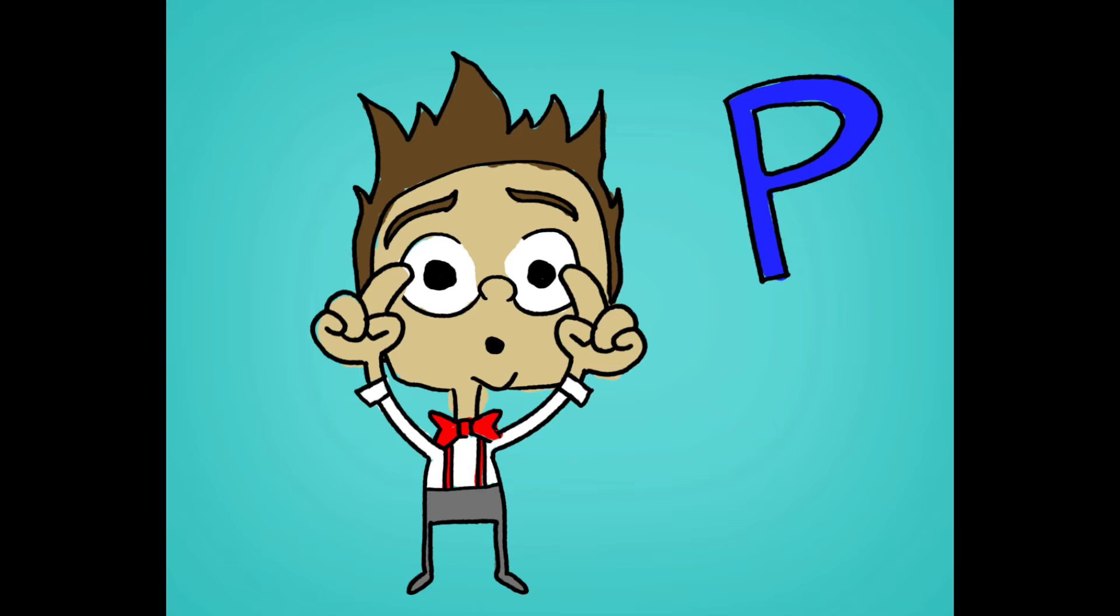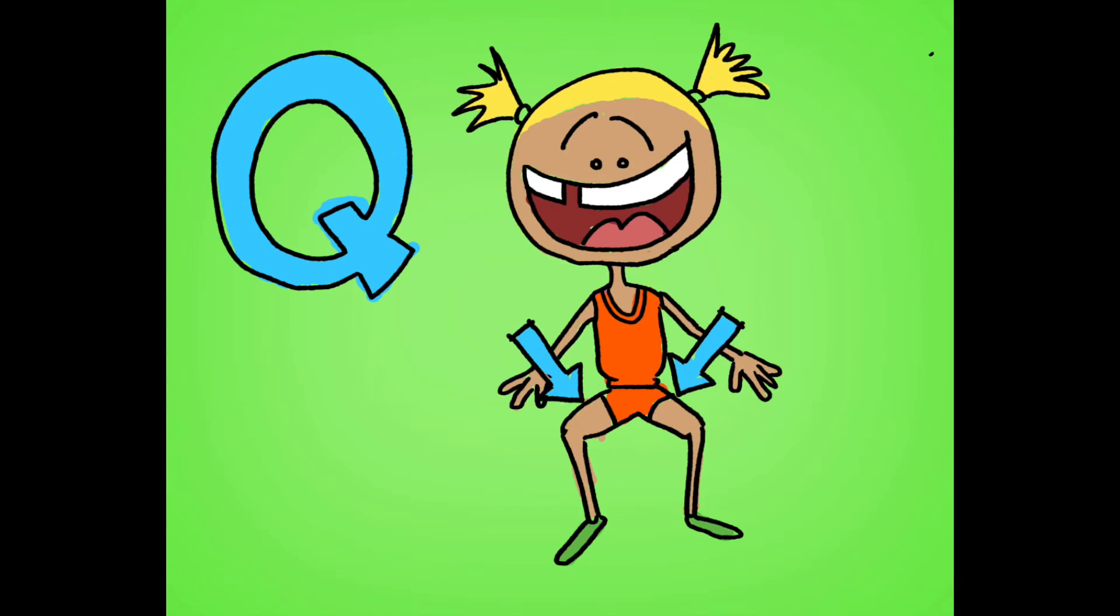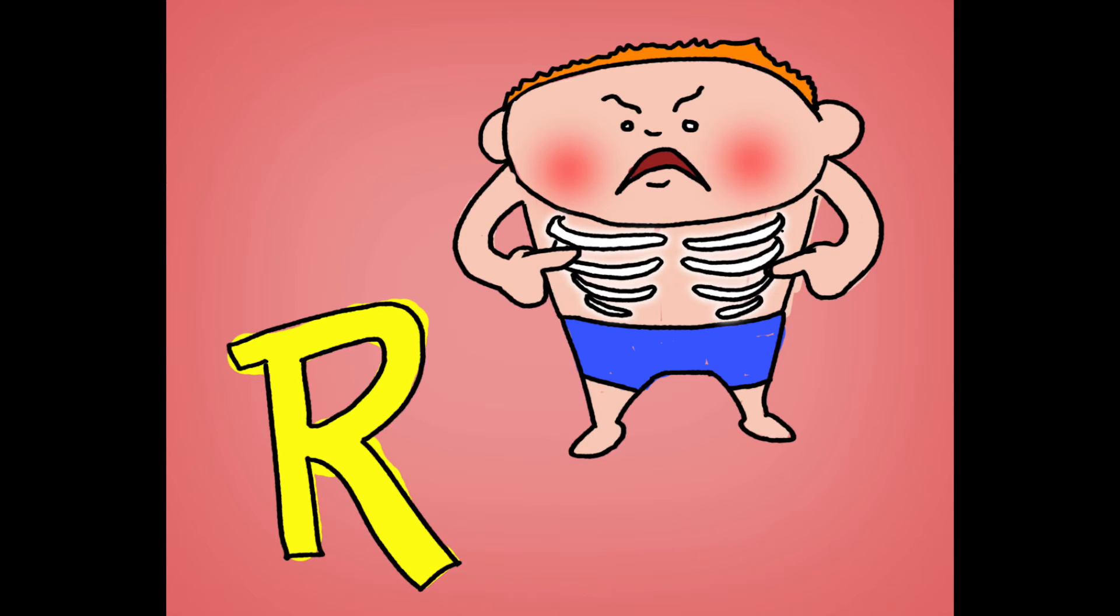P is for pupil, puh puh, pupil. Q is for quadriceps, quh quh, quadriceps. R is for ribs, r r r, ribs.